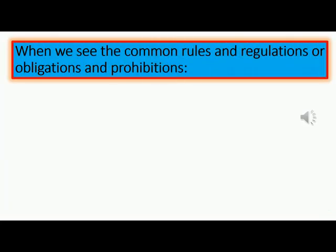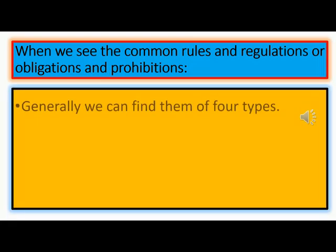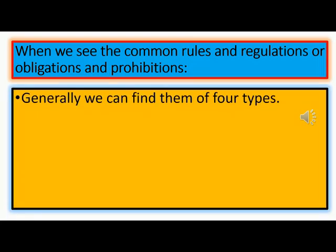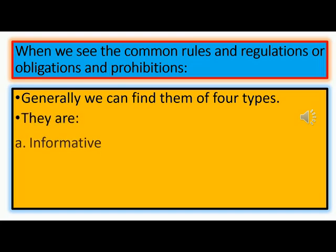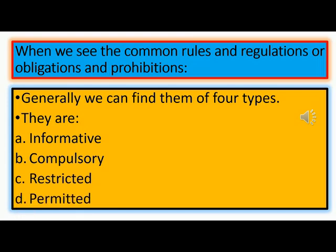When we look at common rules and regulations or obligations and prohibitions, generally we can find them of four types. They are: informative, compulsory, restricted, and permitted.